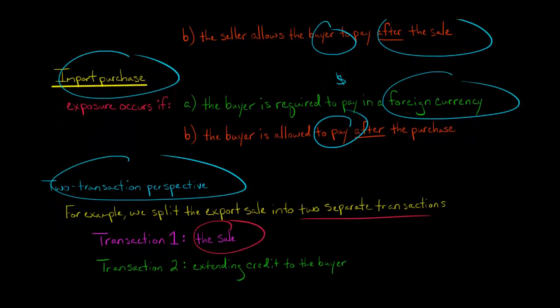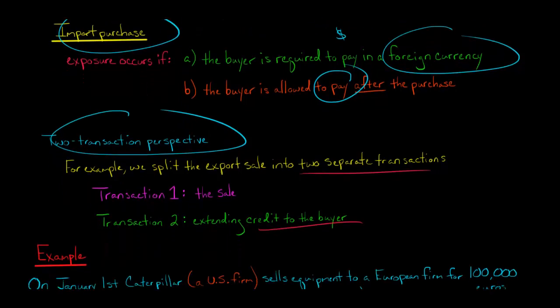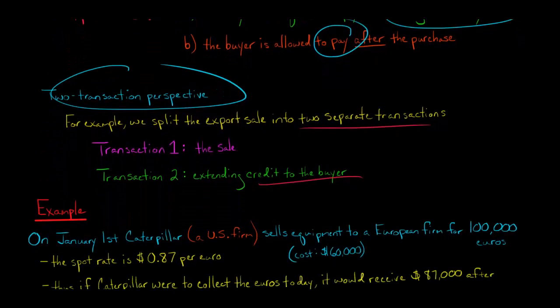So we're going to separate this into two separate transactions. First, we're going to have the sale where we're going to record accounts receivable and sales revenue, and then we're going to have a second part where we're going to treat it as if we are extending credit to the company that's buying these goods from us. And I think it's a little easier to see with an example, so let's put some numbers to this.